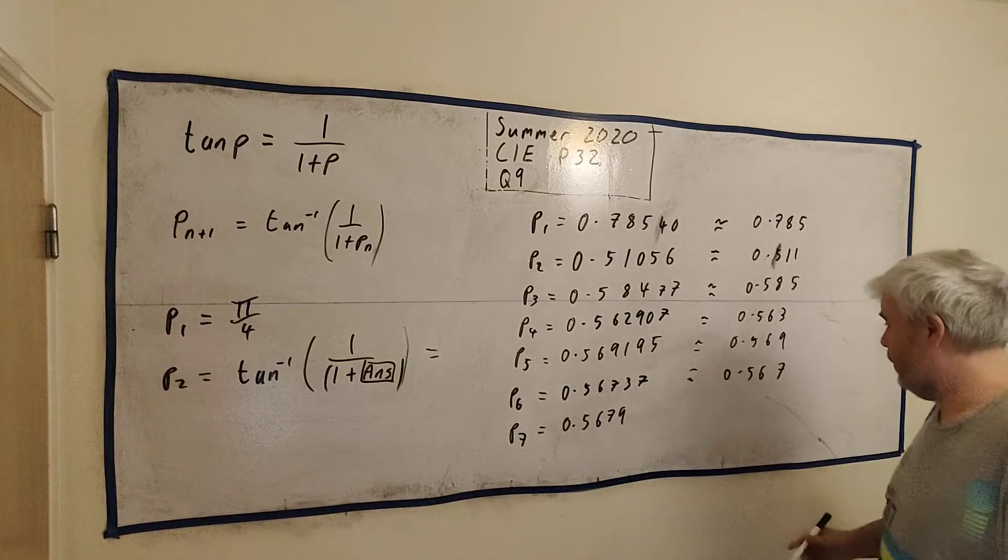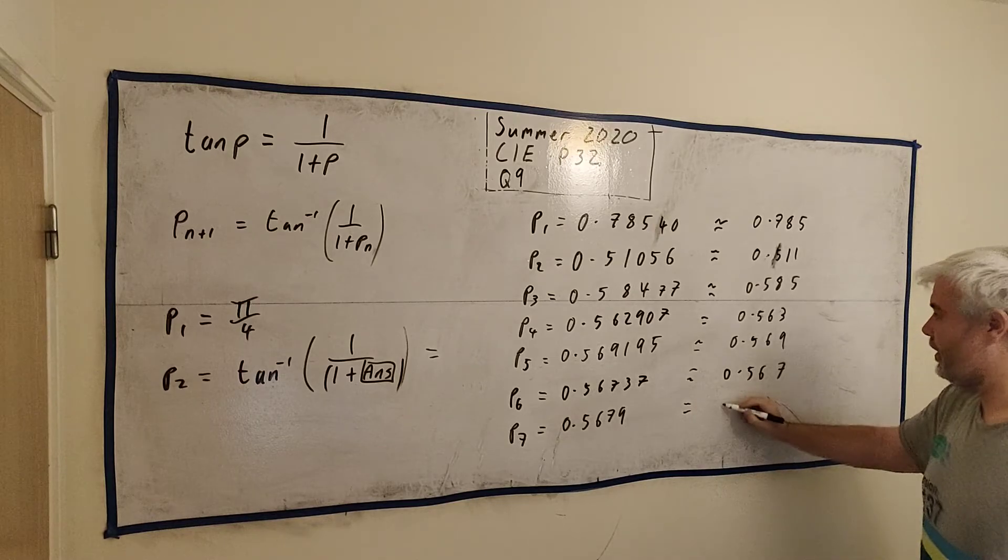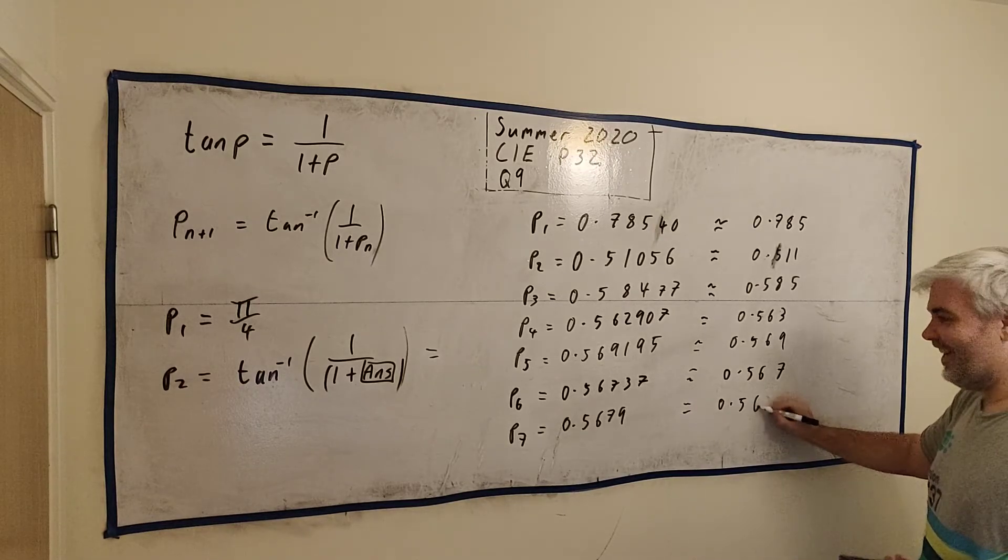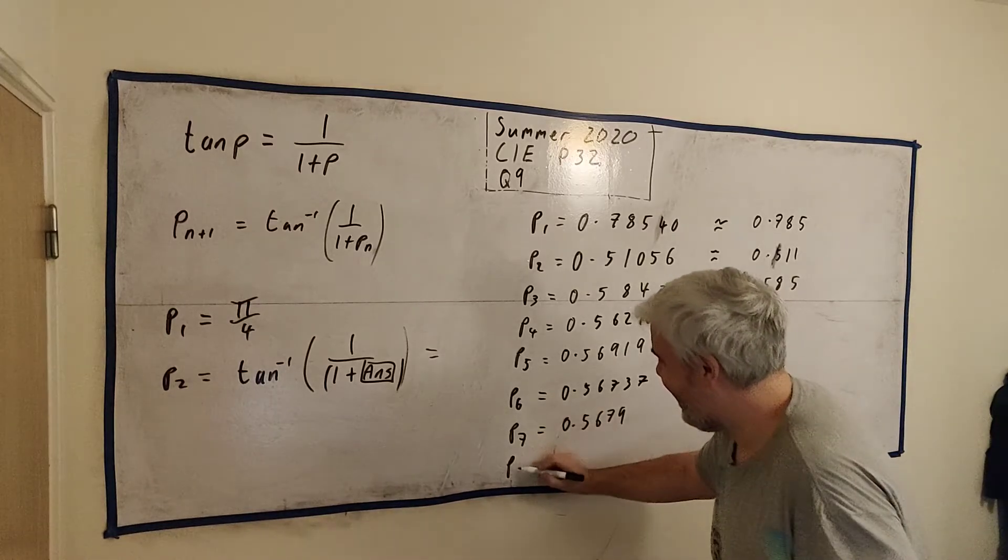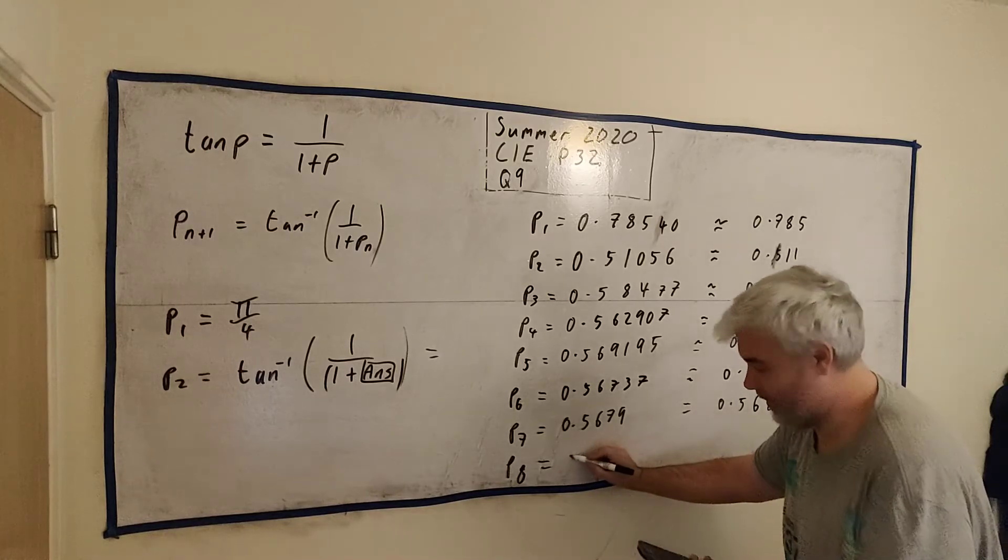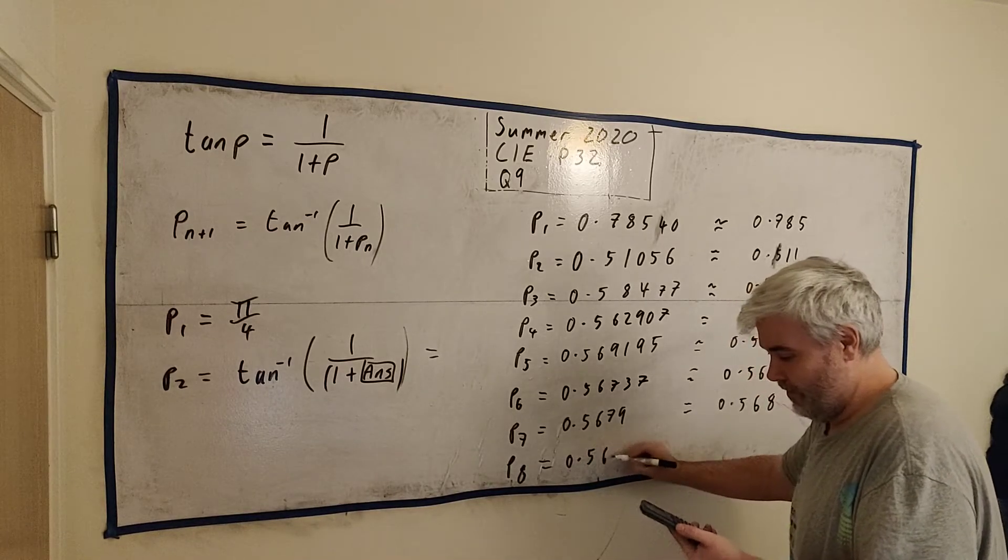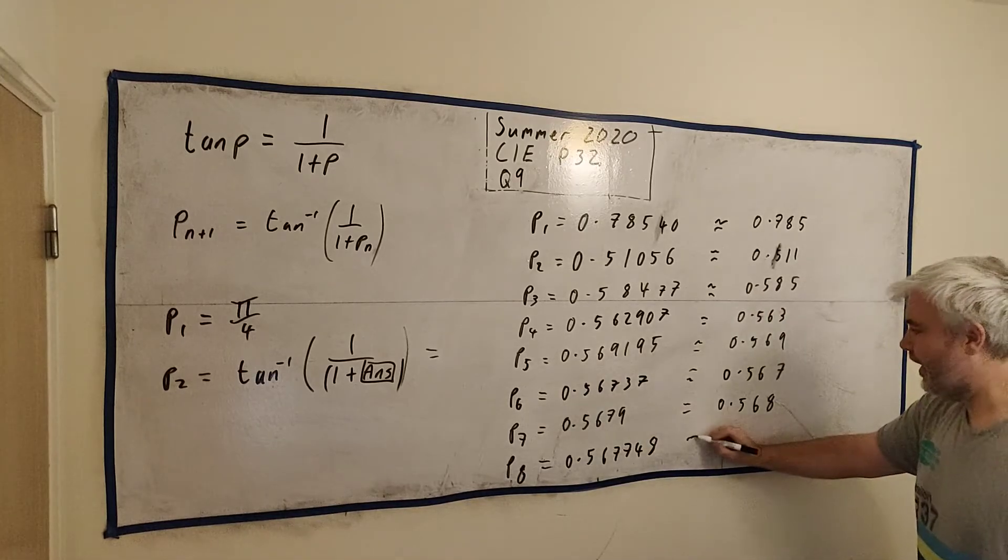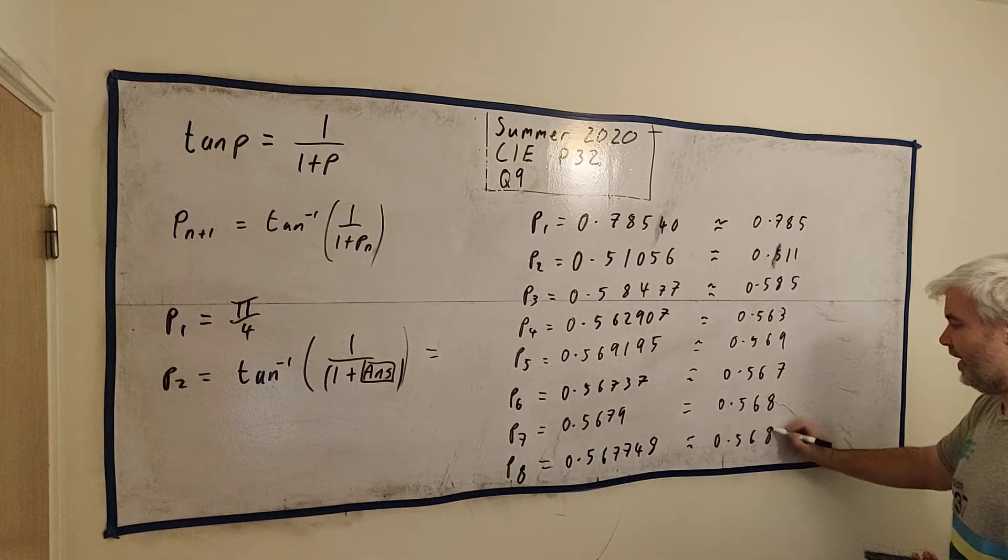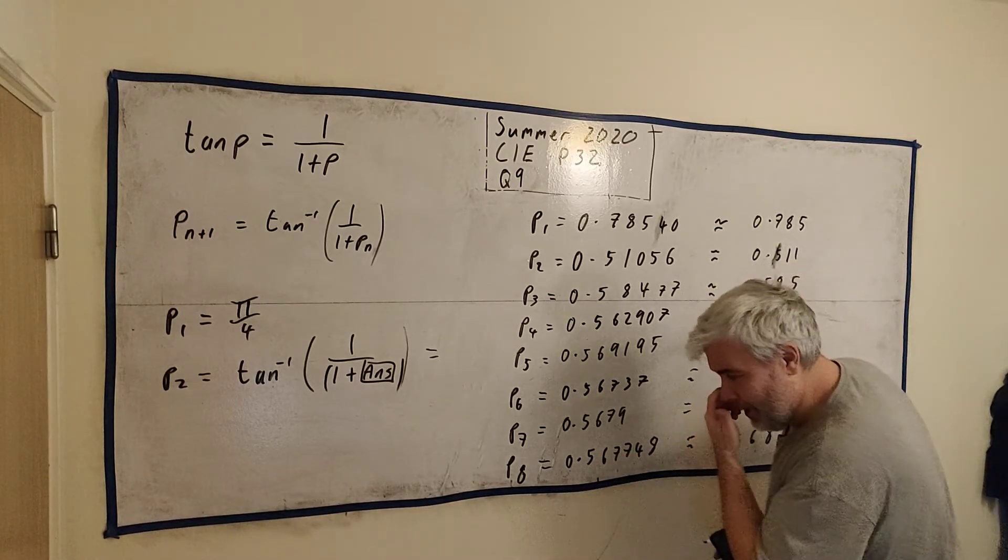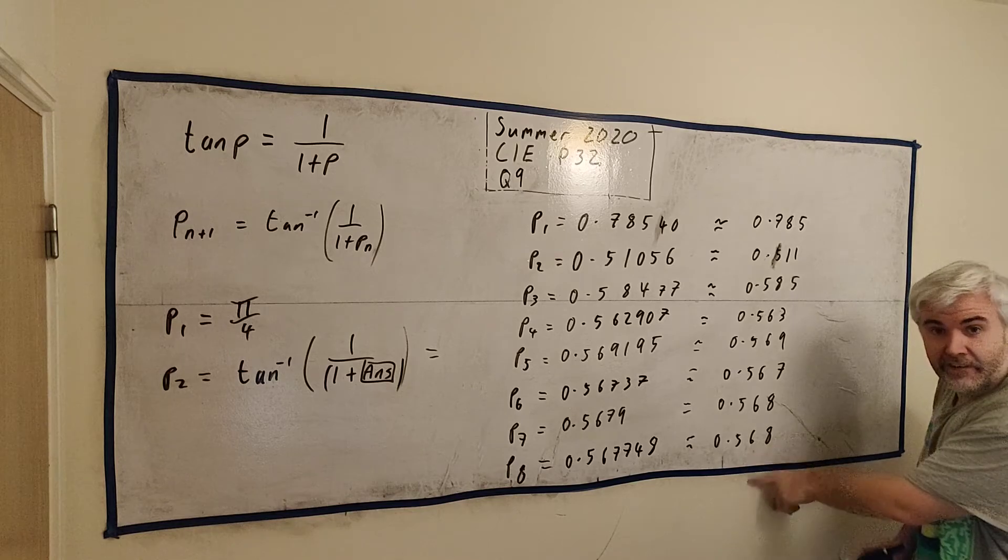0.56737, which is approximately 5, 6, 7. I think it's only one more, I hope. 0.567900, which is approximately 0.568. 0.567748, and that is approximately 0.568 again. And if you keep going, and I recommend you do a few more maybe, you will find just this every time. You won't get any better than this.